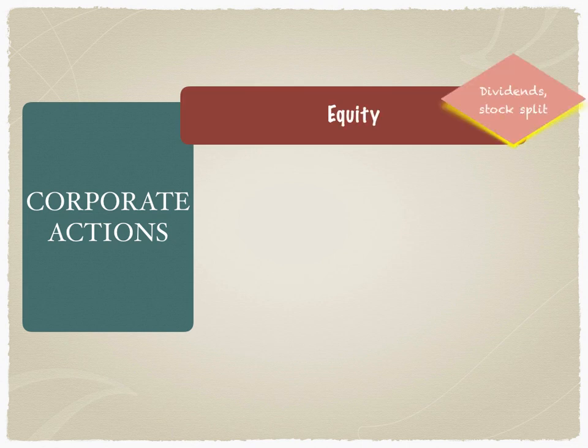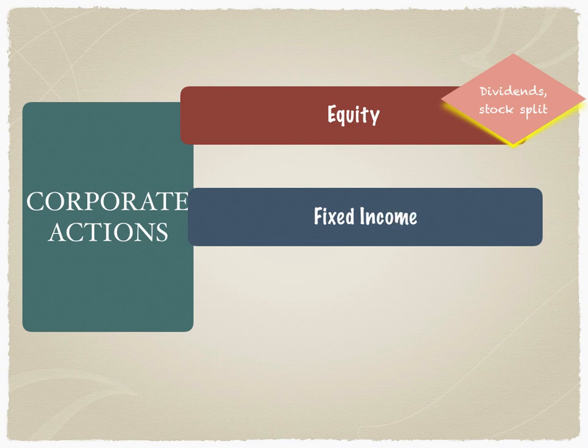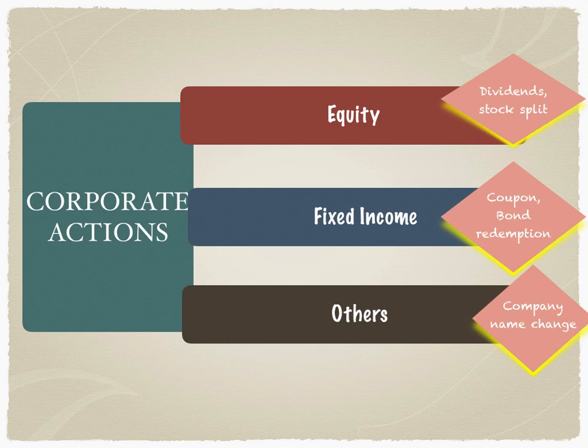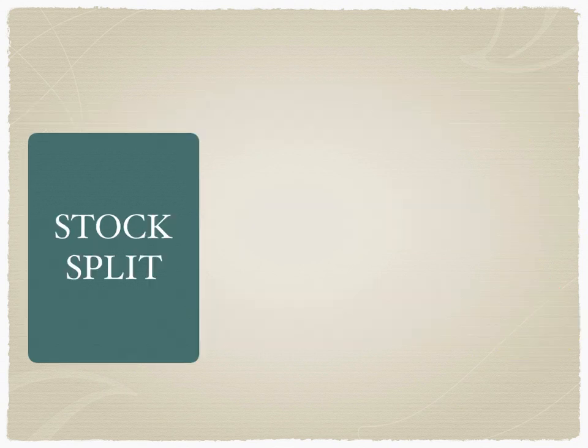Corporate actions could impact equity instruments — these include dividends and stock splits. They could impact fixed income instruments like coupon payments, bond redemptions, and bond conversions. It could also be something as simple as changing the company name, which sounds simple but could actually result in a change of the ISIN. So corporate actions can affect equity capital, fixed income capital, or even the structure and title of the organization.